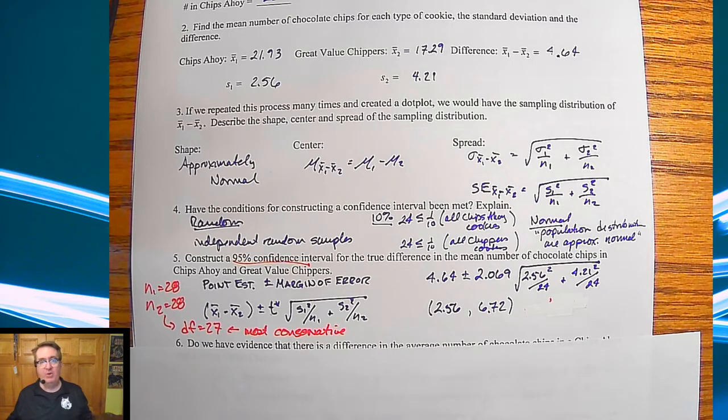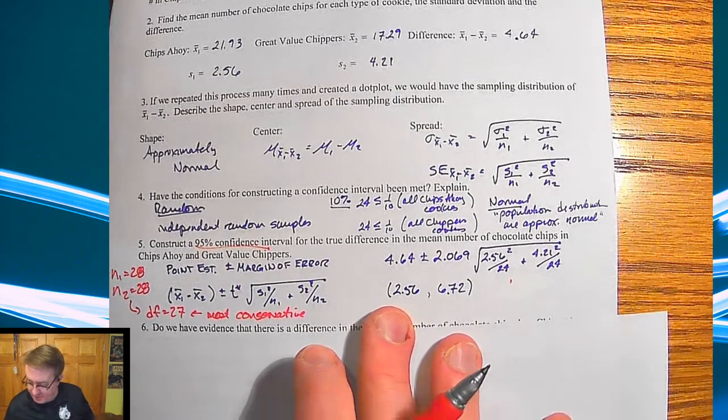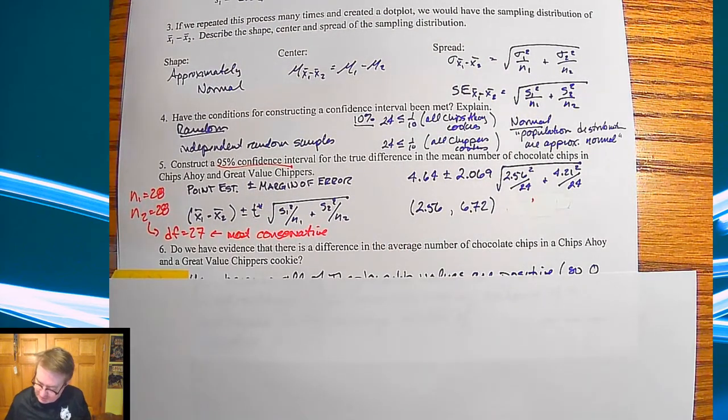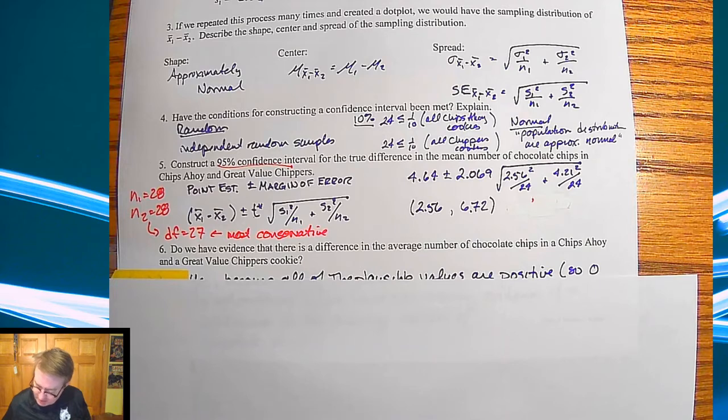Okay. Because then that way you can't be questioned. You can say, this is the most conservative thing that I have here and go from there. Now, do we have evidence to say that there's a difference in range of cookies between Chips Ahoy and Great Value Chipper cookies?